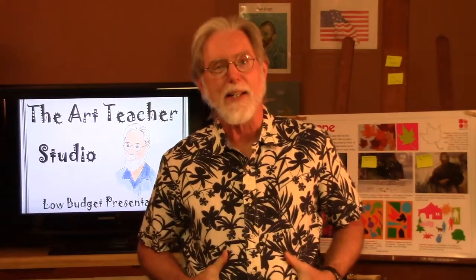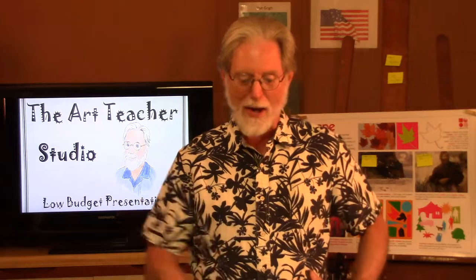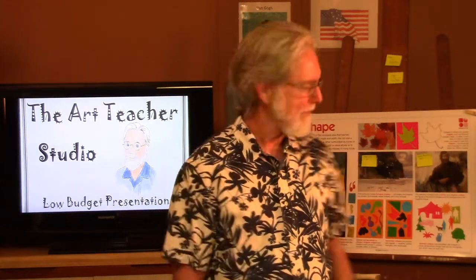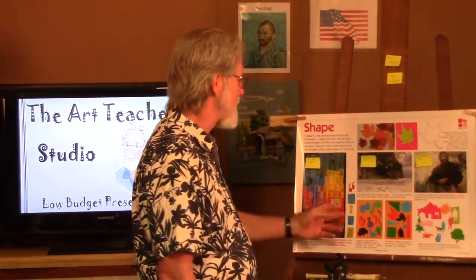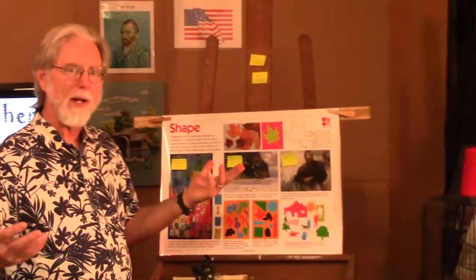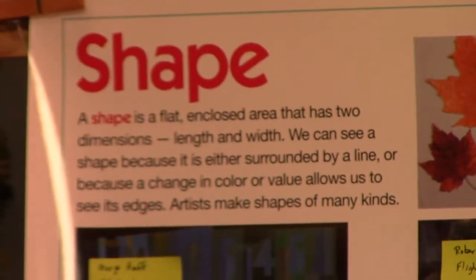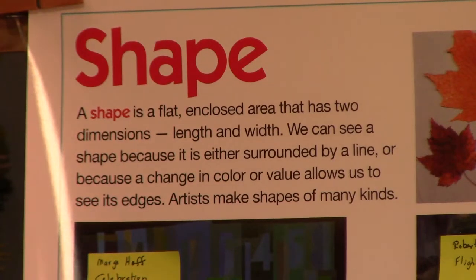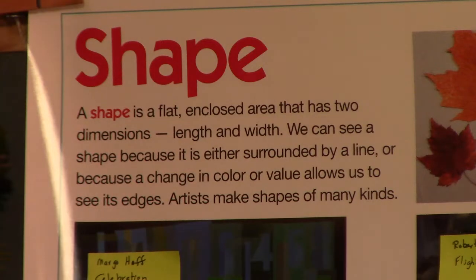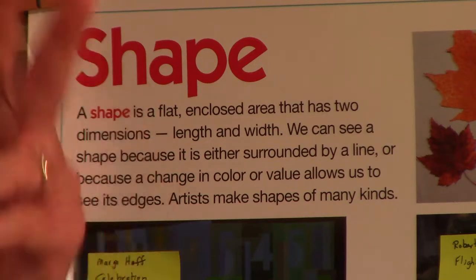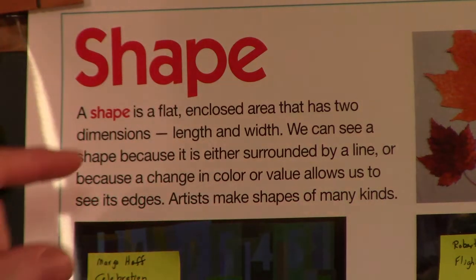I think round is a shape, don't you? Okay, I have a poster here from Crystal Productions. It says that shape is flat — yes it is. Shape is a flat, enclosed area that has two dimensions: length and width. The length is how long, the width is how wide — just two measurements, very flat.